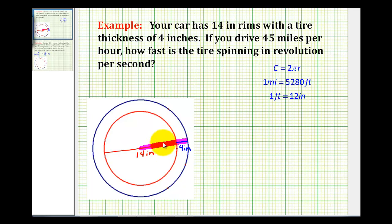If the diameter is 14, then the radius of the red circle is 7, and 7 plus 4 would give us a radius of 11 inches.